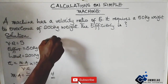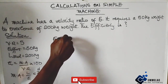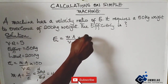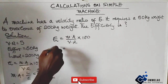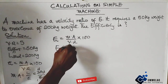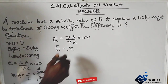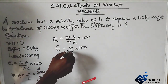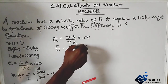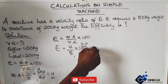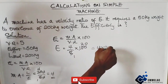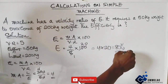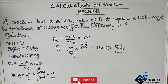Now we input this into the efficiency formula: efficiency equals mechanical advantage over velocity ratio times 100. Mechanical advantage is 4, over 5, times 100. That gives 4 times 20, which equals 80%. So our final answer is 80%.